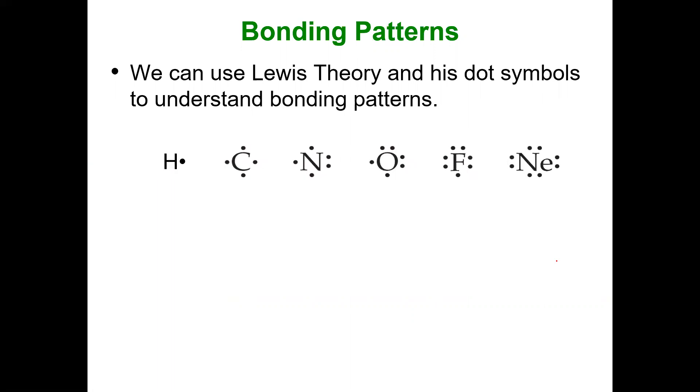So if I look at the elements, here I have some elements, and I can discuss bonding patterns based on their symbols. So we see that hydrogen has one dot, one valence electron, but essentially hydrogen wants two. As a result, hydrogen forms one bond, because in a bond there's two electrons.